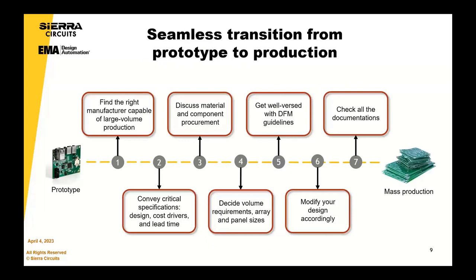Here within Sierra, we really offer this virtually integrated solution. We obviously have our prototype facilities, our medium and mass production facilities through PCB fabrication, and also our assembly and testing facilities and component procurement facilities too. By teaming up with Sierra, it helps you to find the right manufacturer right at that early stage — one who's capable not only of bringing your prototypes to market, but also enabling that seamless transition into the mass production environment using the same equipment and processes, eliminating the need to do further qualifications. Engaging with our teams to discuss any material and component procurement requirements is key too.